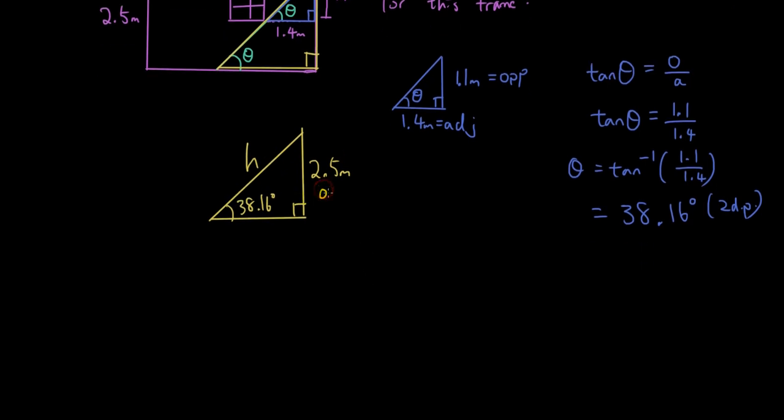So using opposite hypotenuse using sine theta, I have 2.5 over H. So rearranging that, H equals 2.5 over sine 38.16, and that should give me the answer.